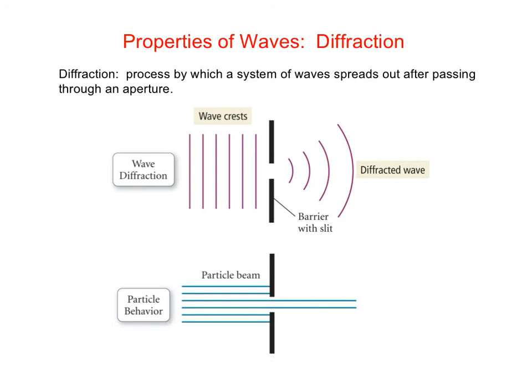Another property of waves that we're interested in is diffraction. This is the ability of light or waves to bend around corners, or formally to say the process by which a system of waves spreads out after passing through an aperture. If I have a source of waves incident on a screen that has a hole in it, the waves will spread out after passing through that hole or passing through that aperture.